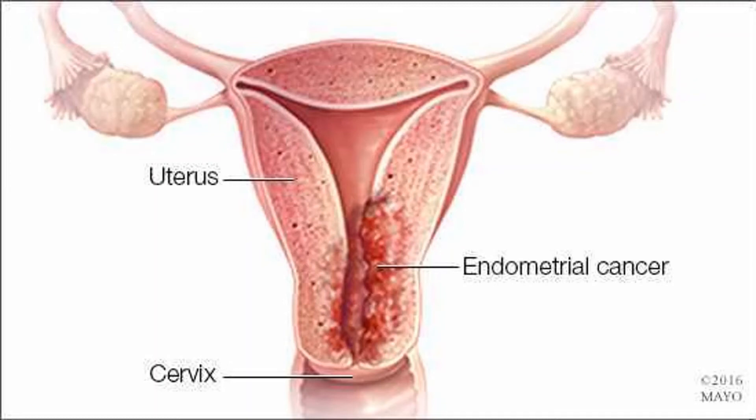What is endometrial cancer? Endometrial cancer starts when cells in the endometrium, the inner lining of the uterus, start to grow out of control. Cells in nearly any part of the body can become cancer, and can spread to other parts of the body. To learn more about how cancers start and spread, see 'What is cancer?'